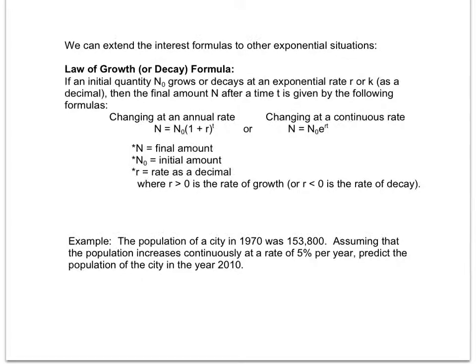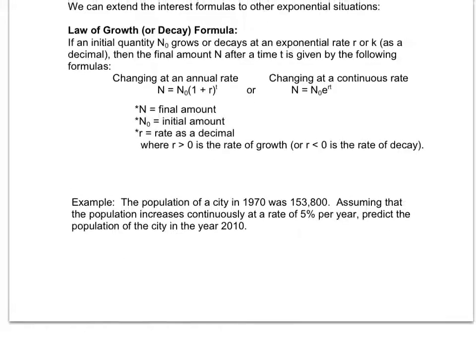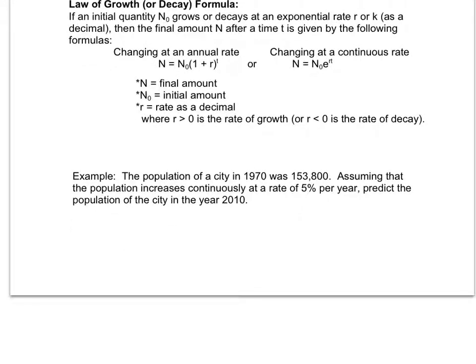So looking at an example, suppose we have a city in 1970 with a population of 153,800. If we assume that the population increases continuously at a rate of 5% per year, we can predict the population of the city of the year 2010. So I have no idea what my population of my city is when it first started. That's not what it's referring to when we say our initial amount. We're referring to the initial amount we're given. So the initial amount we're given in 1970 was 153,800. So I'm going to go ahead and let n sub zero be 153,800.